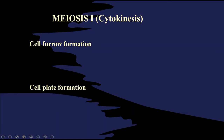The karyokinesis is over. Now cytokinesis is going to happen — which is the division of cytoplasm. Cell furrow formation is going to happen in animals, and cell plate formation is going to happen in plants.